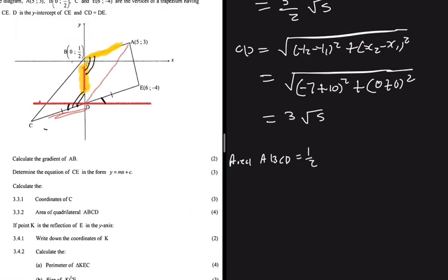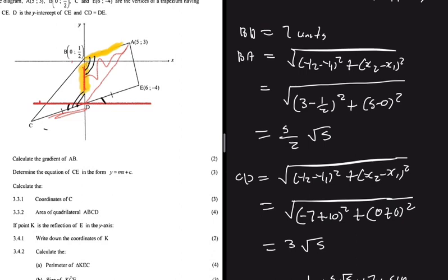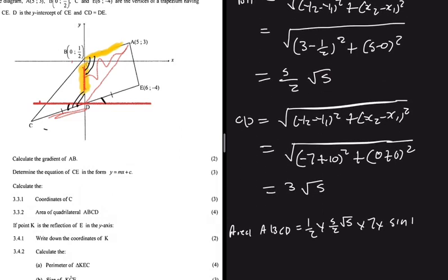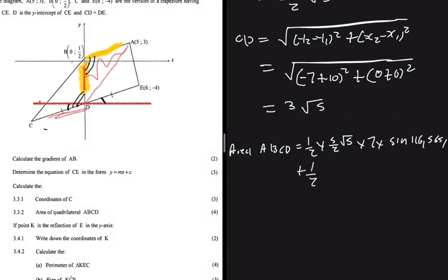The area of ABCD = ½ × (5/2)√5 × 7 × sin(116.5651°) + ½ × 3√5 × 7 × sin(116.5651°). Evaluating this gives approximately 38.5 square units.